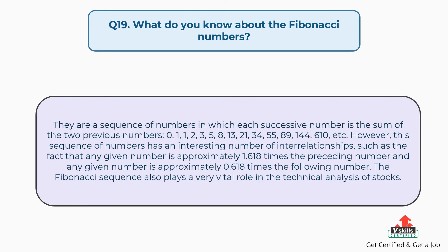Question number 19: What do you know about the Fibonacci numbers? They are a sequence of numbers in which each successive number is the sum of the two previous numbers: 0, 1, 1, 2, 3, 5, 8, 13, 21, 34, 55, 89, 144, 610, etc. This sequence has an interesting number of interrelationships, such as the fact that any given number is approximately 1.618 times the preceding number and approximately 0.618 times the following number. The Fibonacci sequence also plays a very vital role in the technical analysis of stocks.